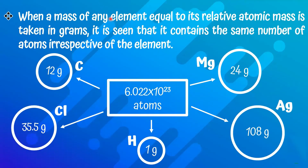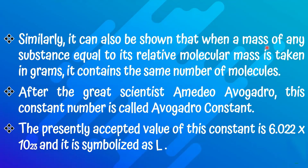Let's learn about the Avogadro constant. When a mass of any element equal to its relative atomic mass is taken in grams, it contains the same number of atoms irrespective of the element. The Avogadro constant value is 6.022 × 10²³. For example, 12 grams of carbon contains 6.022 × 10²³ atoms. After the great scientist Amedeo Avogadro, this constant is symbolized as L.